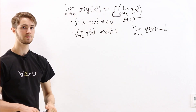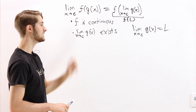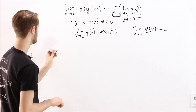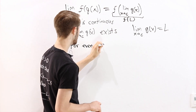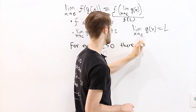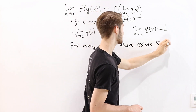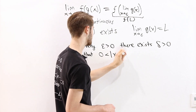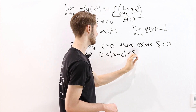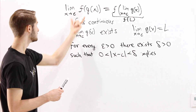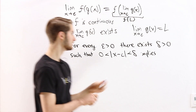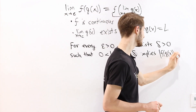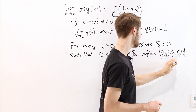We're looking at a limit, so if we want to prove that this limit equals something, we're going to need the epsilon-delta definition. The epsilon-delta definition says that for every epsilon greater than 0, there exists some delta greater than 0, such that 0 less than the absolute value of x minus c less than delta implies that the distance from f of g of x to the limit value f of L is less than epsilon.